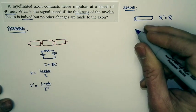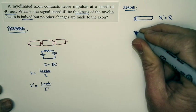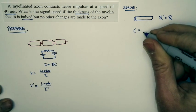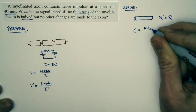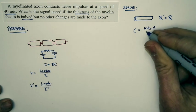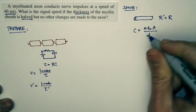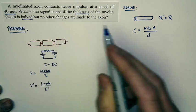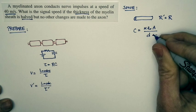But the capacitance will change. For any capacitor, the capacitance is equal to the dielectric constant times epsilon zero times A over D. And if we've halved the thickness of the myelin sheath, we've halved this distance.